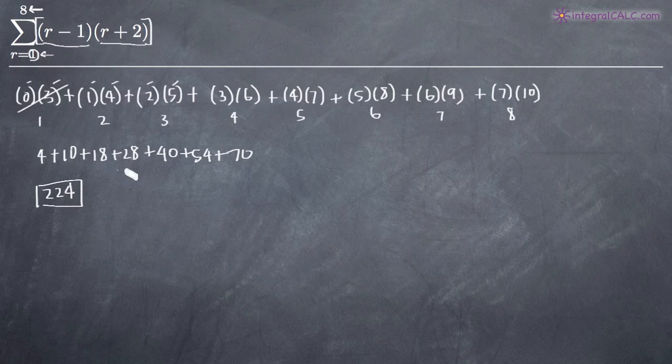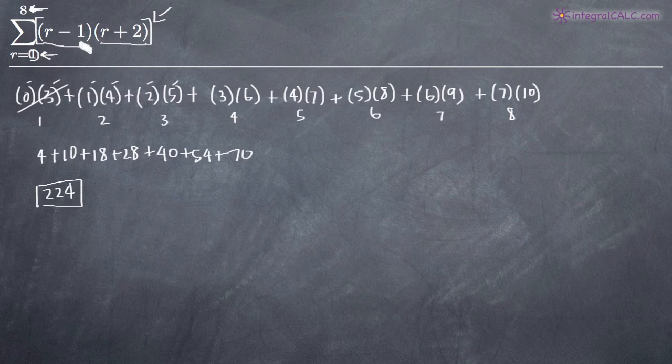And that's it. That's our final answer. So again, you just use the function that you're given here. You start with this number down here, plugging that in first. In this case, it's one. So you start plugging in one, then two, then three. You count up until you get to the top number, which in our case was eight. That's when you stop and then you just simplify with arithmetic or algebra until you get to your final answer.